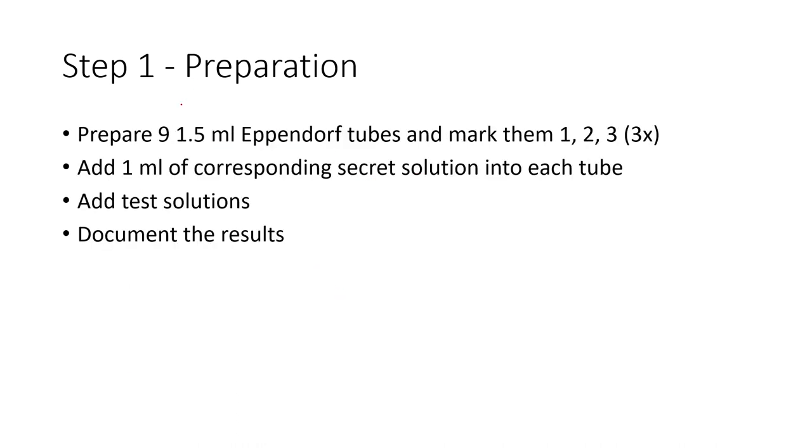On the first step, you'll be given nine Eppendorf tubes. Each tube is 1.5 milliliters and they'll be marked 1, 2, and 3—three sets of tubes that correspond to the secret solutions. You add one milliliter of these secret solutions into the tubes: 1, 2, 3, 1, 2, 3, 1, 2, 3. So secret solution 3 goes to the third Eppendorf.